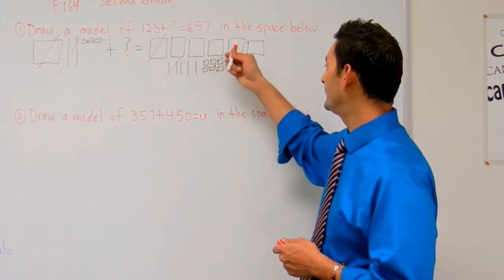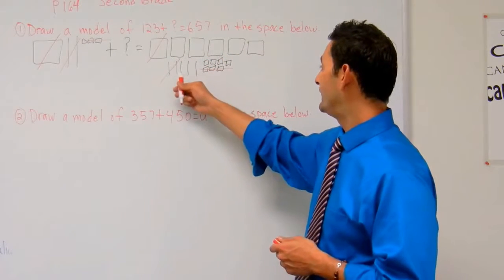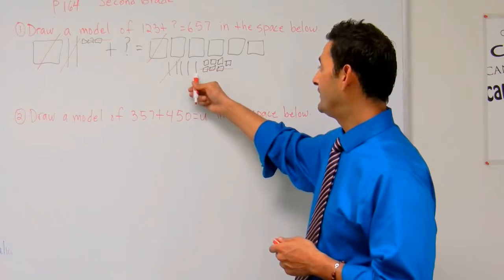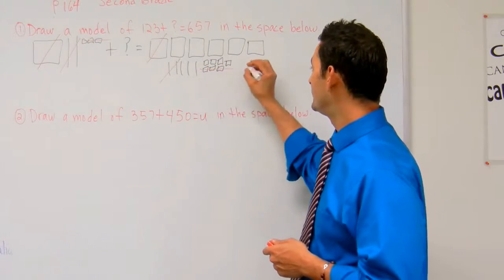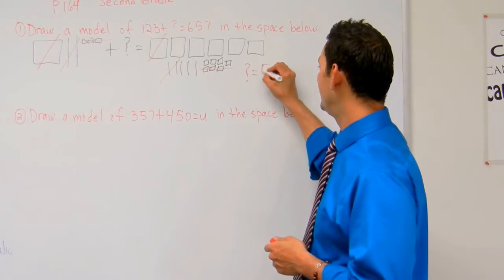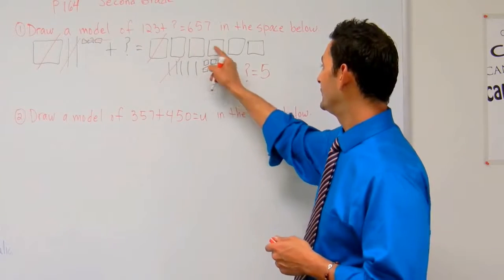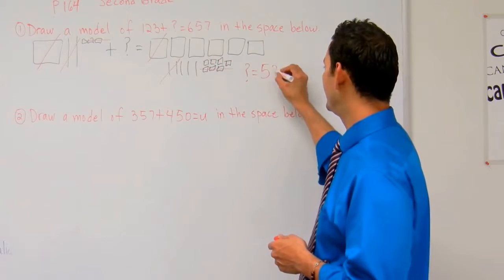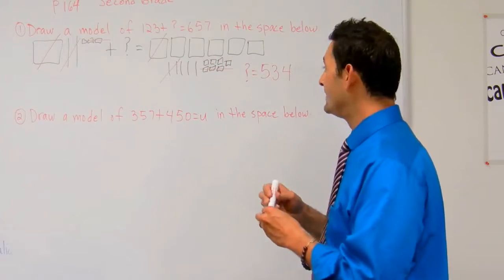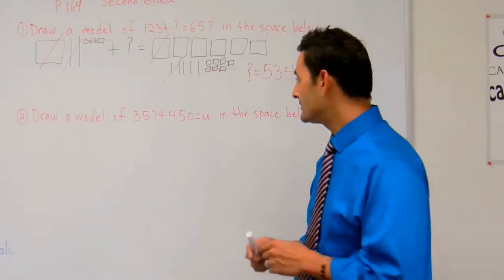We have 100, 200, 300, 400, 500, then 510, 520, 530, then 531, 532, 533, 534. So it's going to equal 534. So again, we always want to take it a little step further.